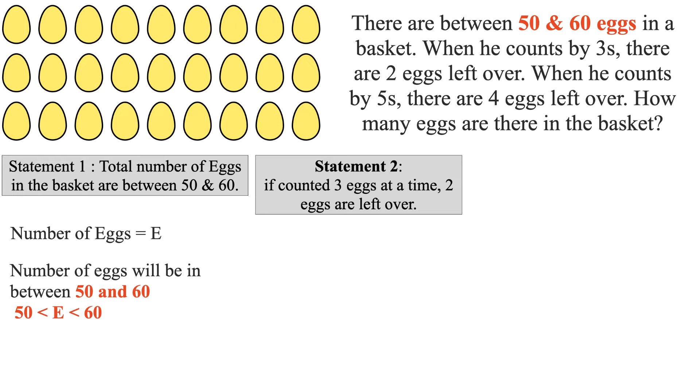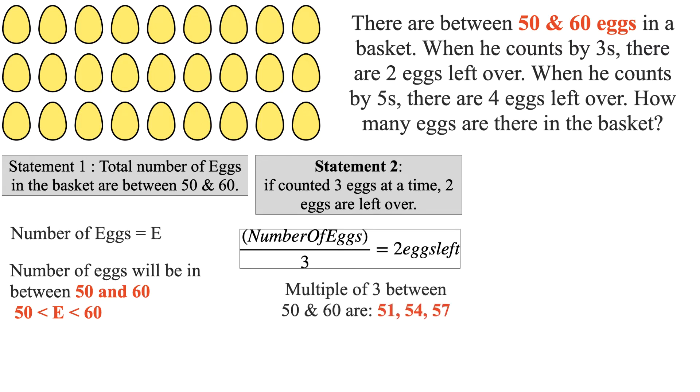In Statement 2, it is also given that if counted 3 eggs at a time, 2 eggs are left over. So number of eggs E will be a multiple of 3 between 50 and 60 plus 2. That is, remainder should be 2 after dividing number of eggs present in the basket by 3. So multiples of 3 between 50 and 60 are 51, 54, 57. Possible answers for E based on Statement 2 are 53, 56, 59. Here we have added 2 for the multiples of 3 between 50 and 60.